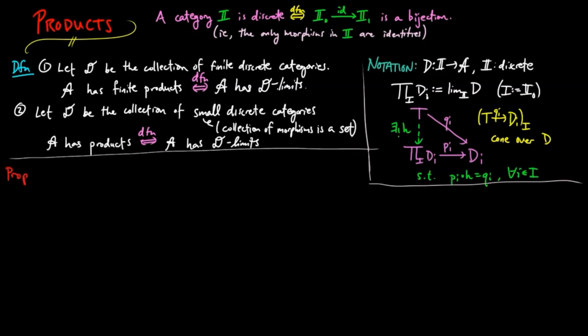We have the following characterization of finite products. The following are equivalent: One, A has finite products. And two, A has a terminal object and binary products.